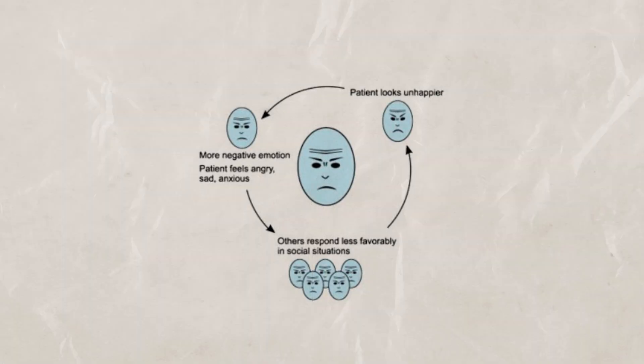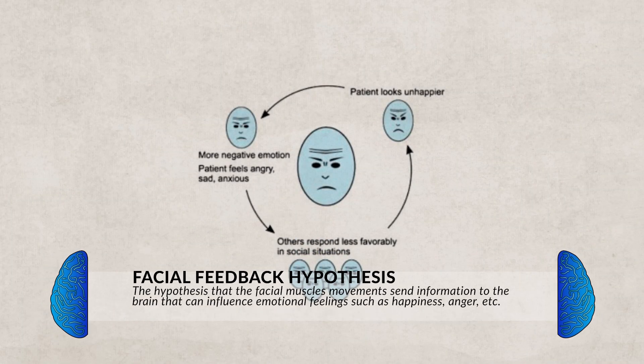Speaking of facial expressions, have you ever heard of the saying 'fake it till you make it'? Well, there actually might be some science behind that. It was studied that when we make certain faces — such as when we smile — it sends information to the brain. The brain then interprets that information and shifts our mood. For example, if you're smiling, even if you're not really happy, the brain receives the information from your facial muscle movements and elevates your mood. This is known as the facial feedback hypothesis.